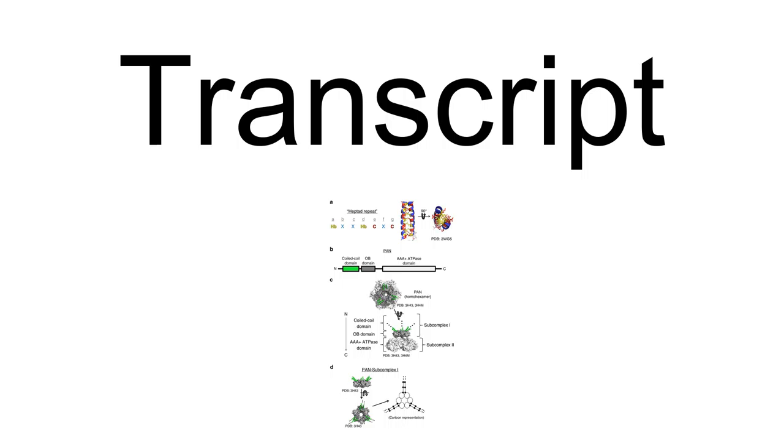Altogether, 11 protein isoforms have been characterized as a result of alternative splicing.